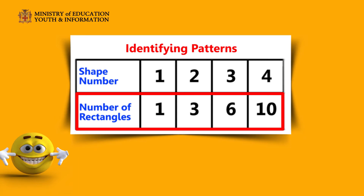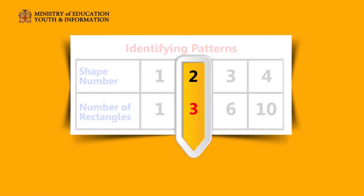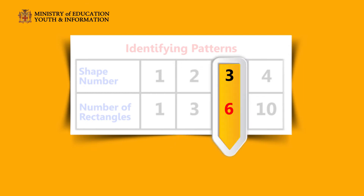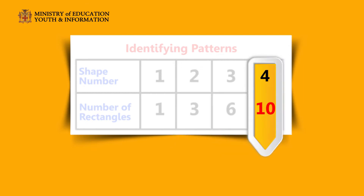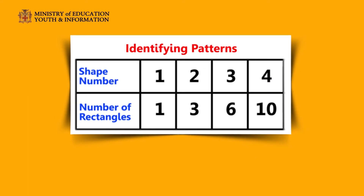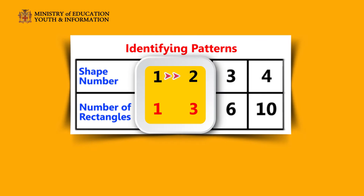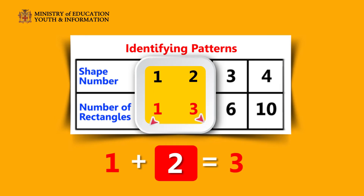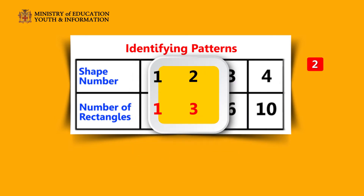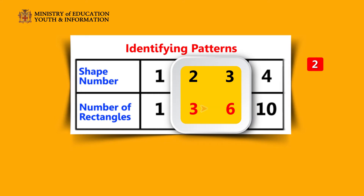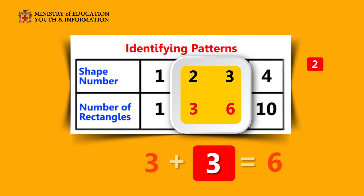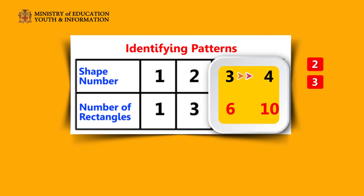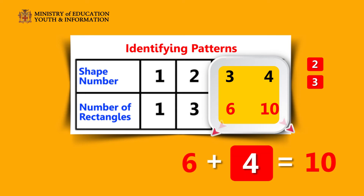If you look at the table carefully, you will see that there is a change in the number of rectangles as the shape number changes. Tell me now if you see a pattern. From shape 1 to shape 2, the rectangles increased by 2 — 1 plus 2 equals 3. From shape 2 to shape 3, the rectangles increased by 3 — 3 plus 3 equals 6. And from shape 3 to shape 4, the rectangles increased by 4 — 6 plus 4 equals 10.